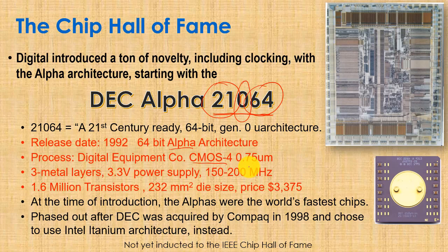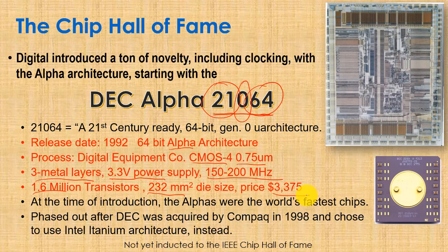The 21064 used a 0.75 micron process with three metal layers, a 3.3V supply, and ran up to 200 MHz. It had 1.5 million transistors, a 232 mm² die, and was priced at $3,000. At introduction, the Alpha chips were the world's fastest. DEC was acquired by Compaq in 1998, which gradually phased out the Alpha in favor of the Itanium. The DEC Alpha has not yet been inducted into the IEEE Chip Hall of Fame, but likely will be someday.